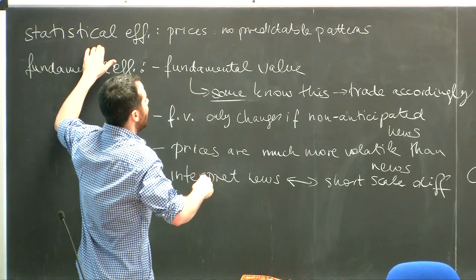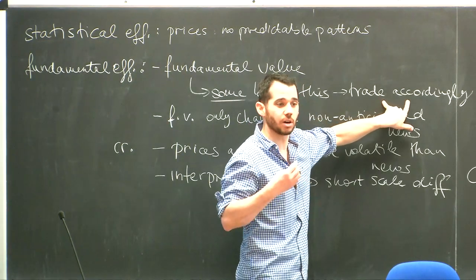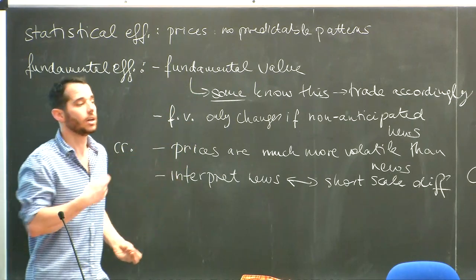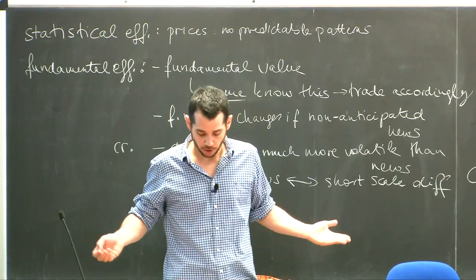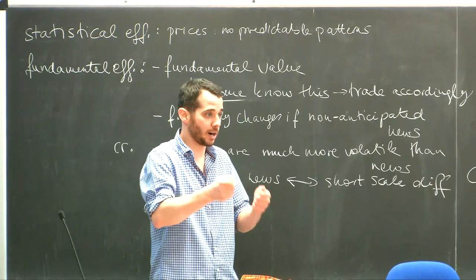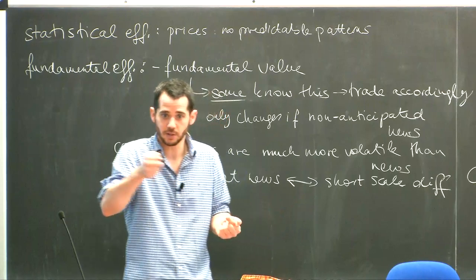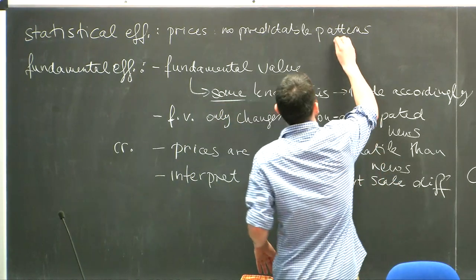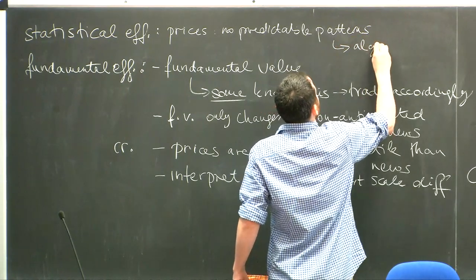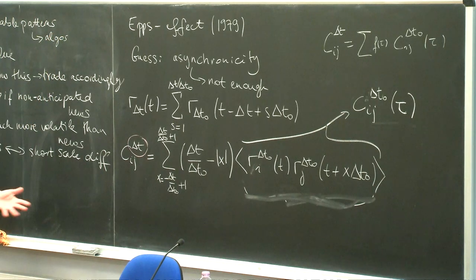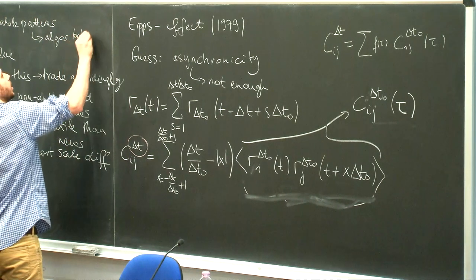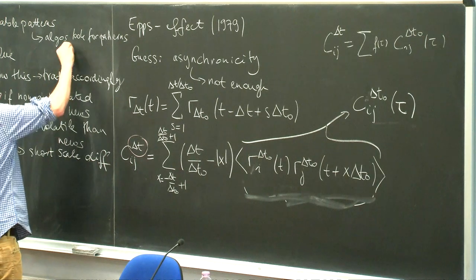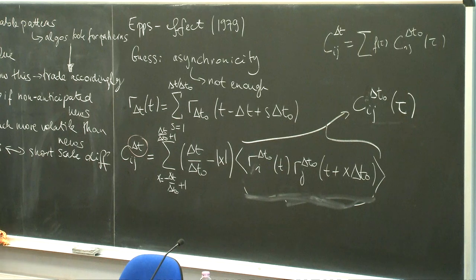So what is statistical efficiency? The idea is that there are a huge number of algorithms - and it could be people trading, but today it's more algorithms - looking for correlations, trying to exploit trends or any predictable patterns, and trading accordingly. Exactly this way, they exclude the patterns. It's a less nice theory than fundamental efficiency would be, but maybe it's more true.